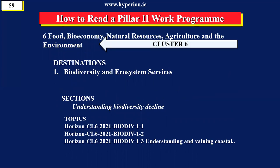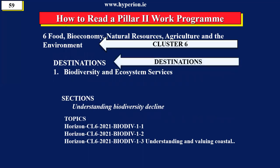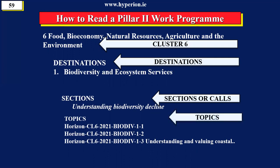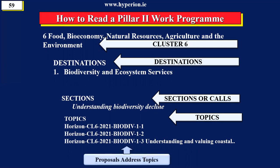When you read a work program — which can be 300 to 500 pages long — the first thing you look at is the cluster, for example Cluster 6. Then you look at the destination, such as biodiversity and ecosystems, and the section dealing with biodiversity decline. Then you find the topic. You don't go straight to the topic; you must read the background to each particular section. When writing a proposal, you say it's addressing topic Horizon CL621. When presenting at a workshop, that's the information you would provide — you can't just say you're in Cluster 6, you have to identify the specific topic relevant to you.